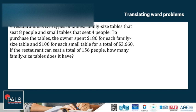Now, another example is a restaurant has two types of tables. Family-sized tables that seat 8 people and small tables that seat 4 people. To purchase the tables, the owner spent $180 for each family-sized table and $100 for each small table for a total of $3,660. If the restaurant can seat a total of 156 people, how many family-sized tables does it have? In this question, the unknowns are the number of each type of table. Let F be the number of family-sized tables and S be the number of small tables. You have two kinds of information: the number of people and the cost. You should be able to create an equation for each of these.